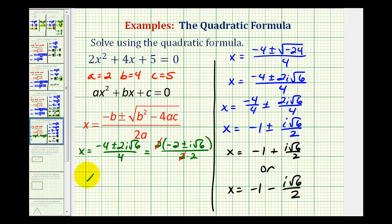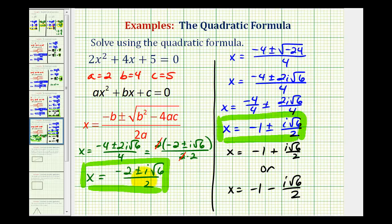leaving us with x equals negative 2 plus or minus i√6 all over 2. So it's important to recognize that this form here and this form here are equivalent, and therefore it would be acceptable.